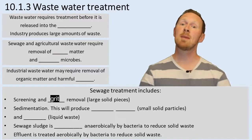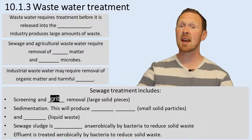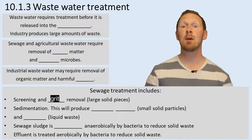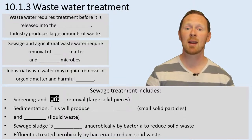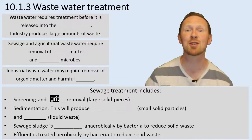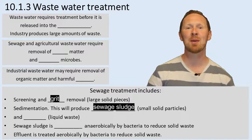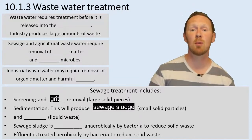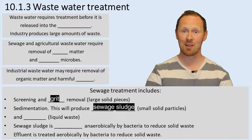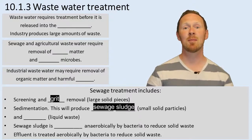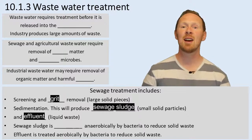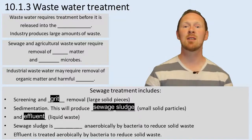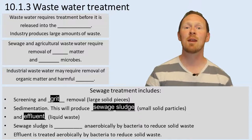The second step involves sedimentation. That's where we allow it to settle and the smaller solid elements settle at the bottom, giving us sewage sludge — the small solid particles that need removing. The other part is called the effluent, which is the liquid waste. So sedimentation separates the sewage sludge from the effluent.